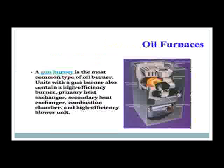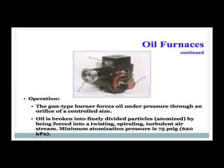A gun burner is the most common type of oil burner. Units with gun burners also contain high-efficiency burners, primary and secondary heat exchangers, a combustion chamber, and high-efficiency blower units. The gun-type burner forces oil under pressure through an orifice of a controlled size. Oil is broken into finely divided particles that are atomized by being forced into a twisting, spiraling, turbulent air stream.